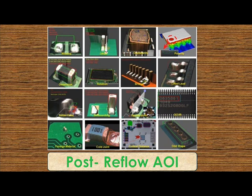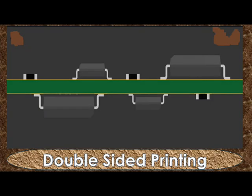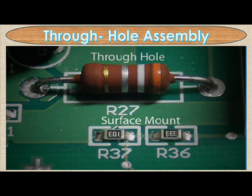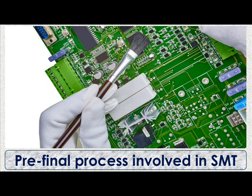If the circuit board is double-sided, the printing and placement reflow process may be repeated using either solder paste or glue to hold the components in place. If a wave soldering process is used, the parts must be glued to the board prior to processing to prevent them from floating off when the solder paste holding them is melted.